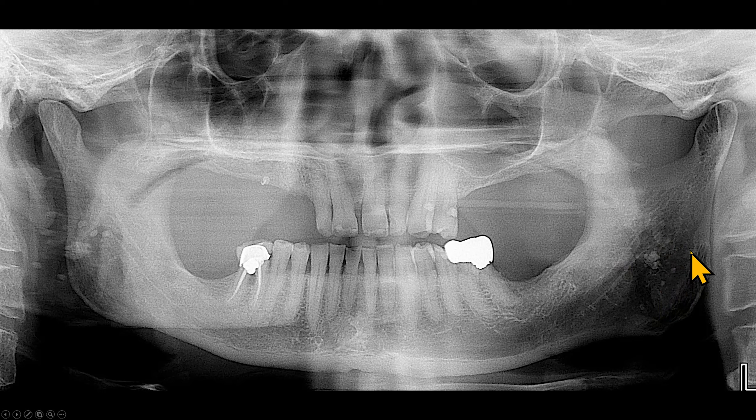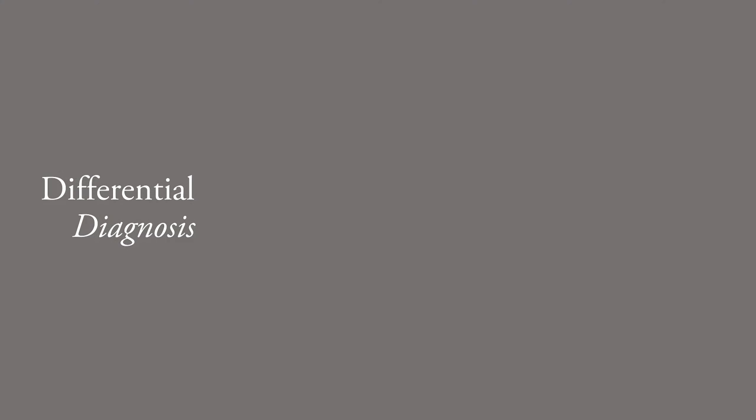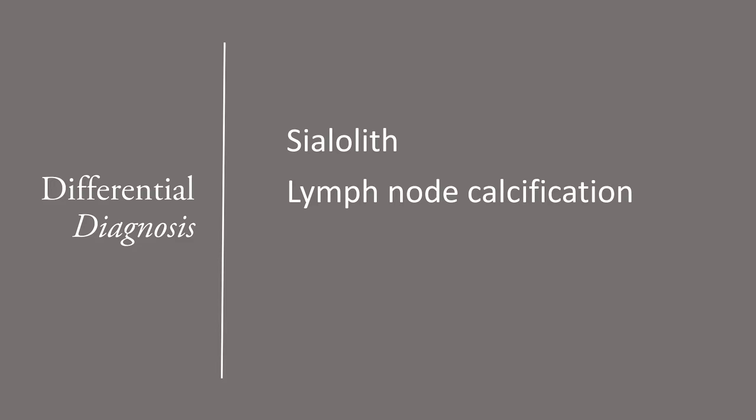Similarly, we saw these radiopacities superimposed over the ramus bilaterally. The differential diagnosis of tonsillar calcification includes calcification of the parotid glands. Parotid calcification is rare, while tonsillar calcifications are common. Tonsillar calcifications are multiple, superimposed over the ramus and oropharyngeal soft tissues. Parotid calcification, if it occurs, would be superiorly located. Lymph node calcifications are usually near the angle of the mandible and are grouped together, unlike the discrete, separate radiopacities of tonsillar calcifications.